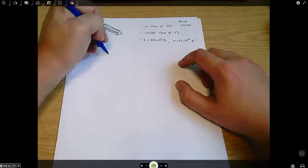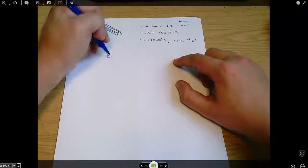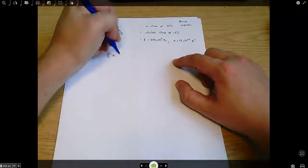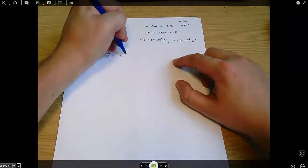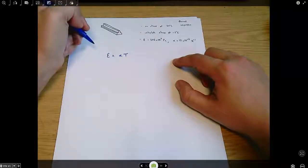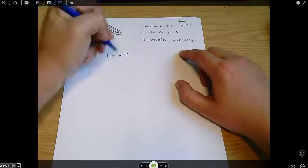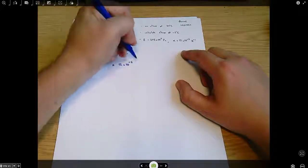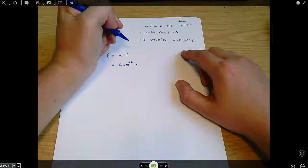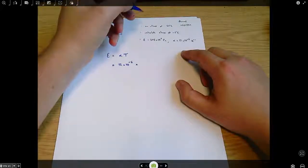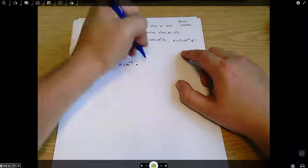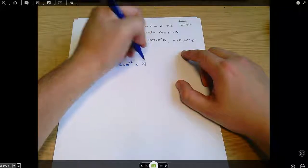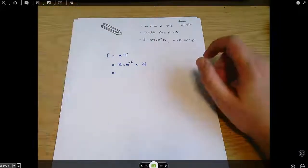So the important thing here is that temperature changes cause strain and the way we calculate that is using strain is thermal expansion times delta T. In this case that's 12 times 10 to the minus 6 multiplied by the temperature difference which is 26 degrees C or 26 Kelvin if you prefer.